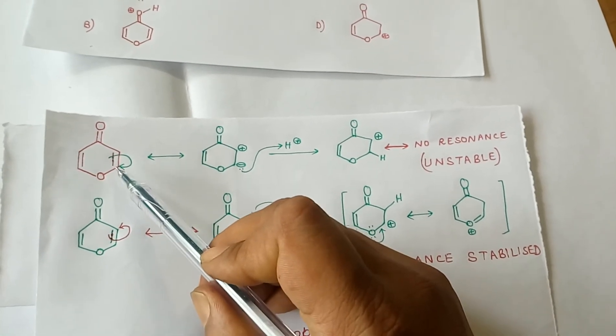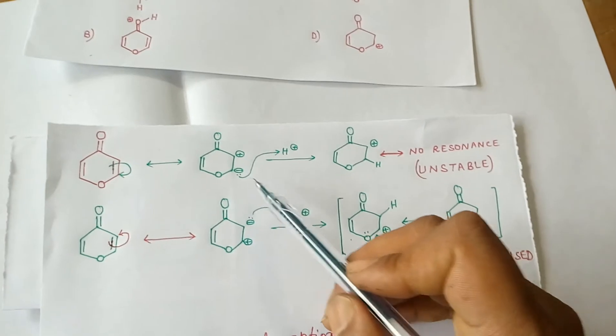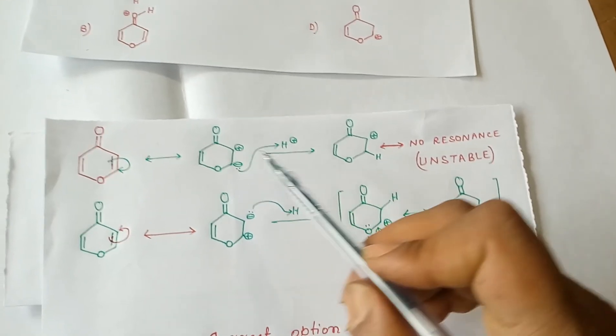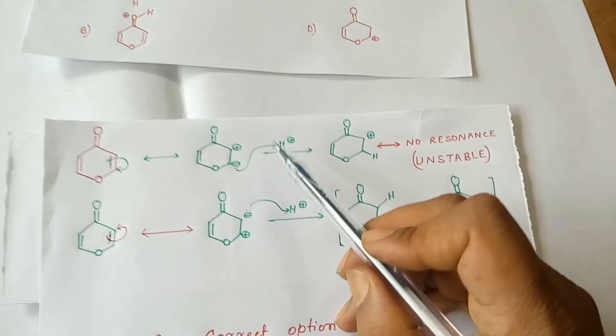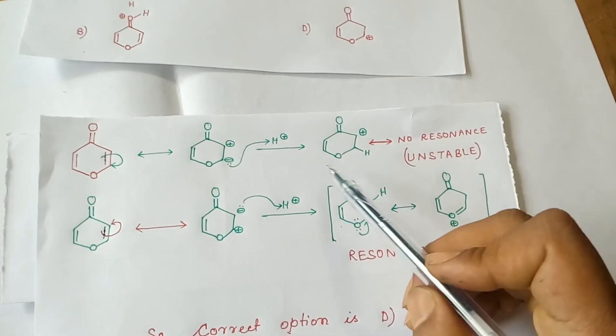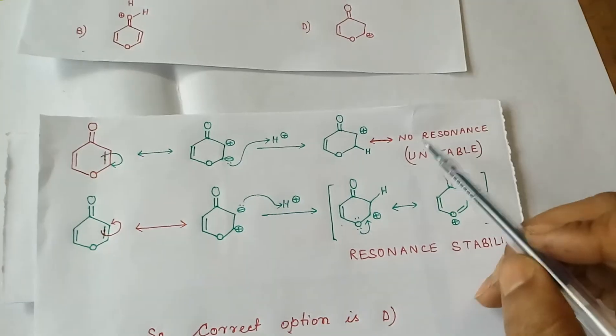The protonation may take place after electromeric effect. This π bond may be taken up by this carbon, so this carbon becomes negatively charged and this carbon is positively charged. Attack on the proton will take place from this carbon, giving us this intermediate. We cannot draw any resonating structure for this, so it is unstable.